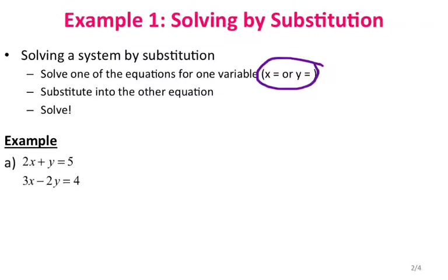Looking at the two equations for this example, I'm going to try to find a variable that's easy to solve for. I'm going to solve for y in my first equation since the leading coefficient for that is 1. So I'm going to get y by itself — I'll subtract 2x from both sides. That gives me y equals negative 2x plus 5.